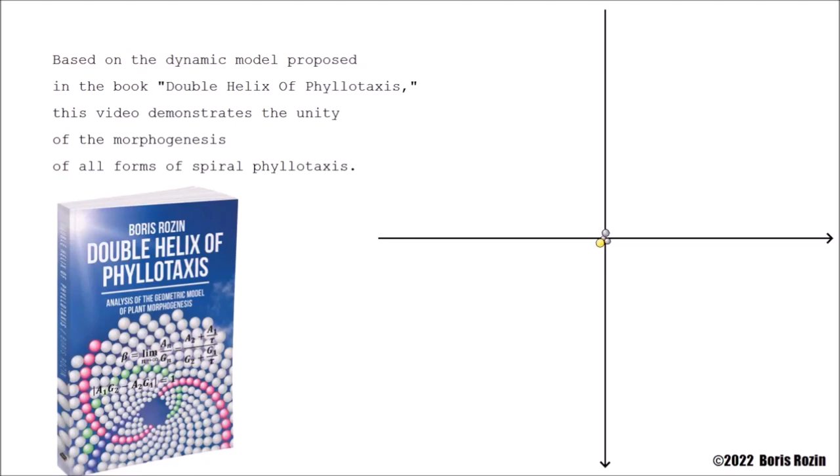Based on the dynamic model proposed in the book Double Helix of Phyllotaxis, this video demonstrates the unity of the morphogenesis of all forms of spiral phyllotaxis.